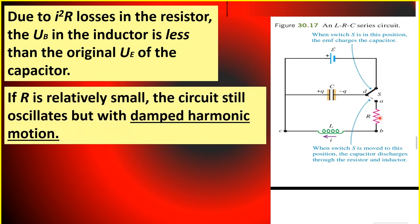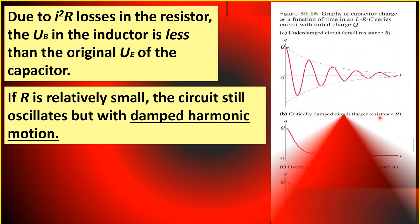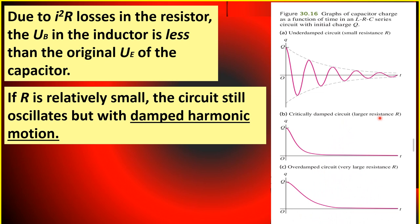If the resistance R of the resistor is relatively small, the circuit will still oscillate. But the kind of oscillation now is described as damped harmonic motion, and we say that the circuit is underdamped. This is shown in figure 30.16a. As time passes, the amount of charge Q becomes less and less, until finally it approaches zero.